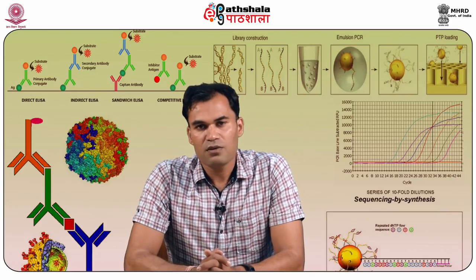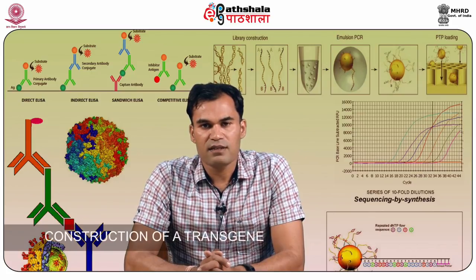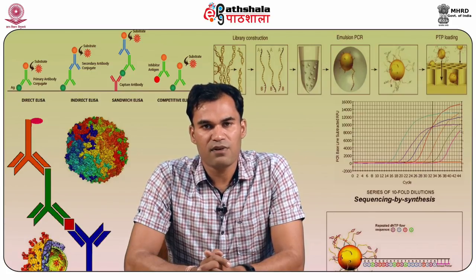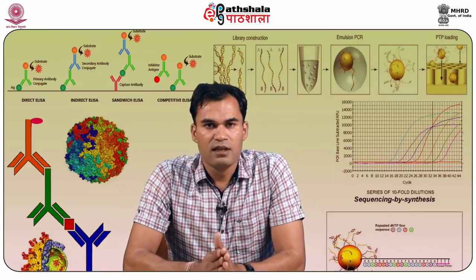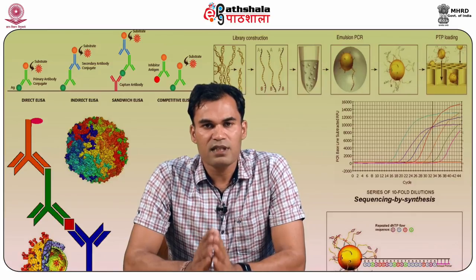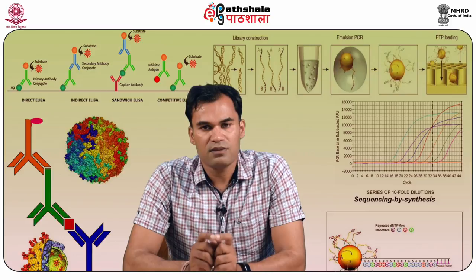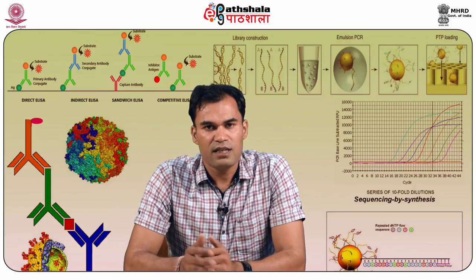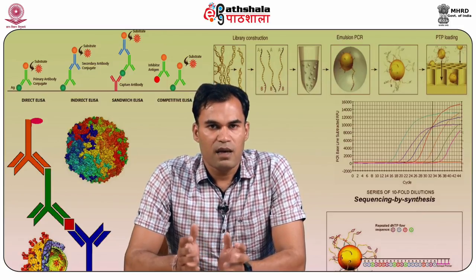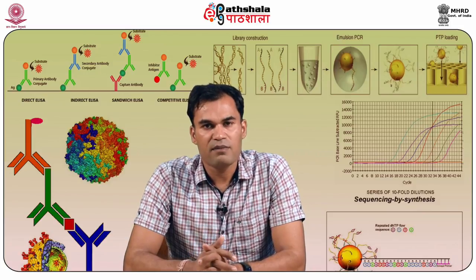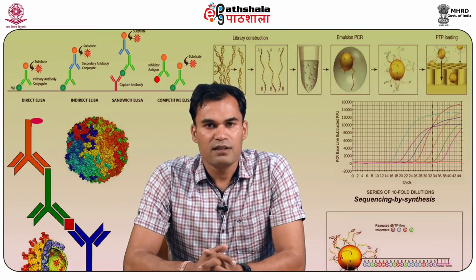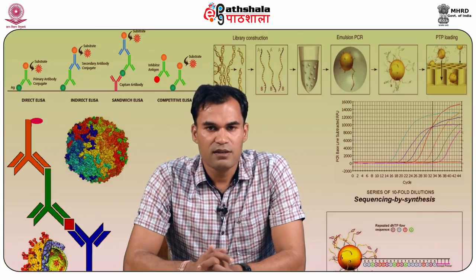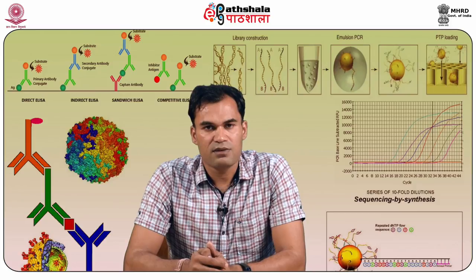How can we produce transgenic animals? There are two important steps. First, we have to construct a transgene, then we have to introduce that foreign gene or transgene into the animal. A transgene contains a promoter, the gene to be expressed, and the termination gene. The promoter is the part of the DNA sequence needed for initiation of transcription. For introduction of a transgene into the animal, we employ different methodologies like microinjection, retroviral mediated gene transfer, embryonic stem cell mediated transfer, and nuclear cell transfer.